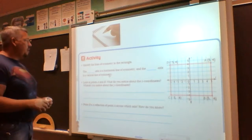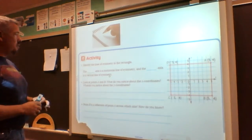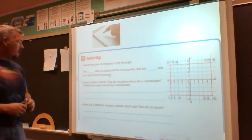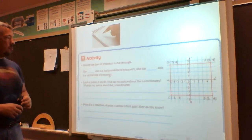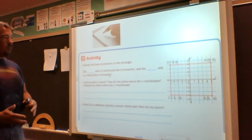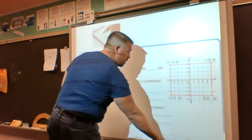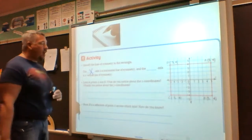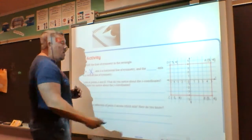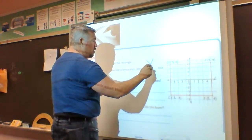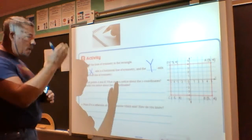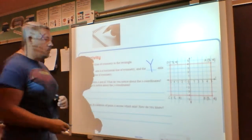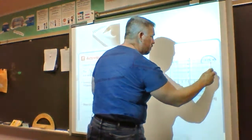First, identify the lines of symmetry in the rectangle on the coordinate plane. The x-axis is a horizontal line of symmetry and the y-axis is a vertical line of symmetry. That checks whether you remember which axis is which — horizontal is the x-axis (it goes across), and the y-axis goes up and down like a vertical line. Now look at points A and B.